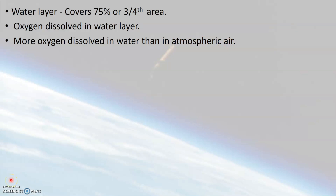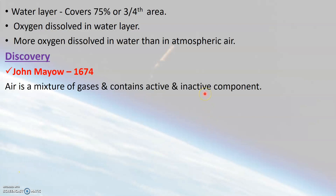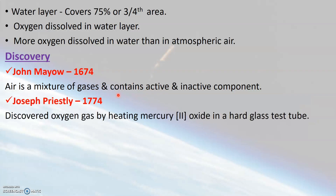Let us learn a little about the history of the discovery of air. In the year 1674, a scientist named John Mayo proved that air is a mixture containing two components: an active component and an inactive component. In the year 1774, another scientist named Joseph Priestley discovered that the active component in air is oxygen gas, which he discovered by heating mercury oxide in a hard glass test tube.